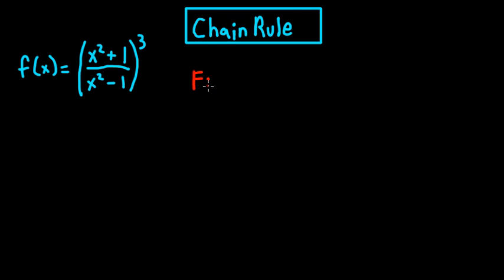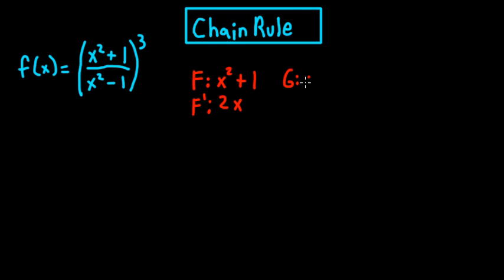Your f is just going to be x squared plus 1, and then f prime is just going to be 2x. Then you're going to get your g, which is going to be x squared minus 1, and g prime which is also going to be 2x.